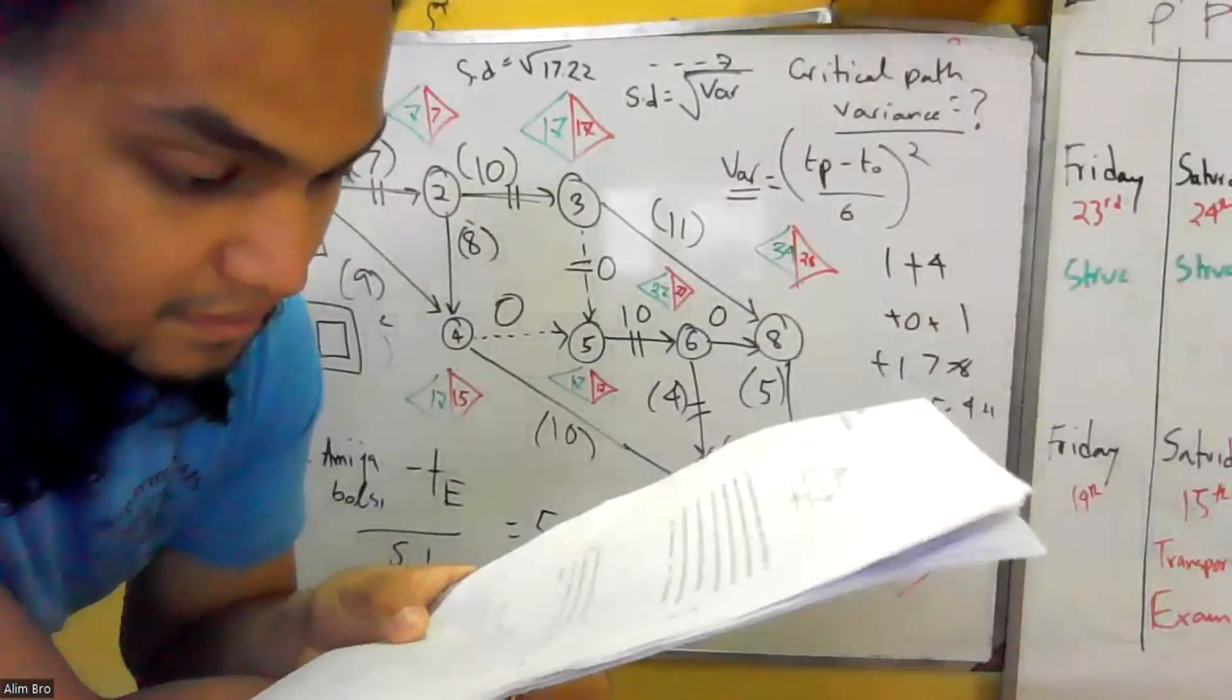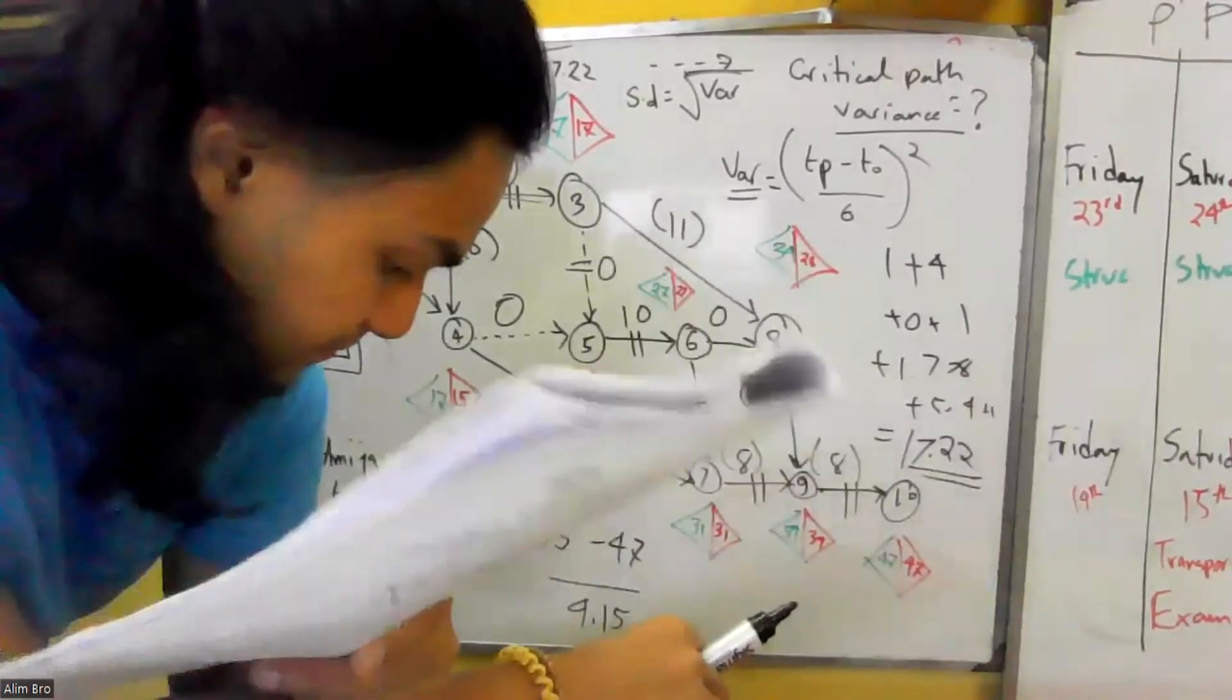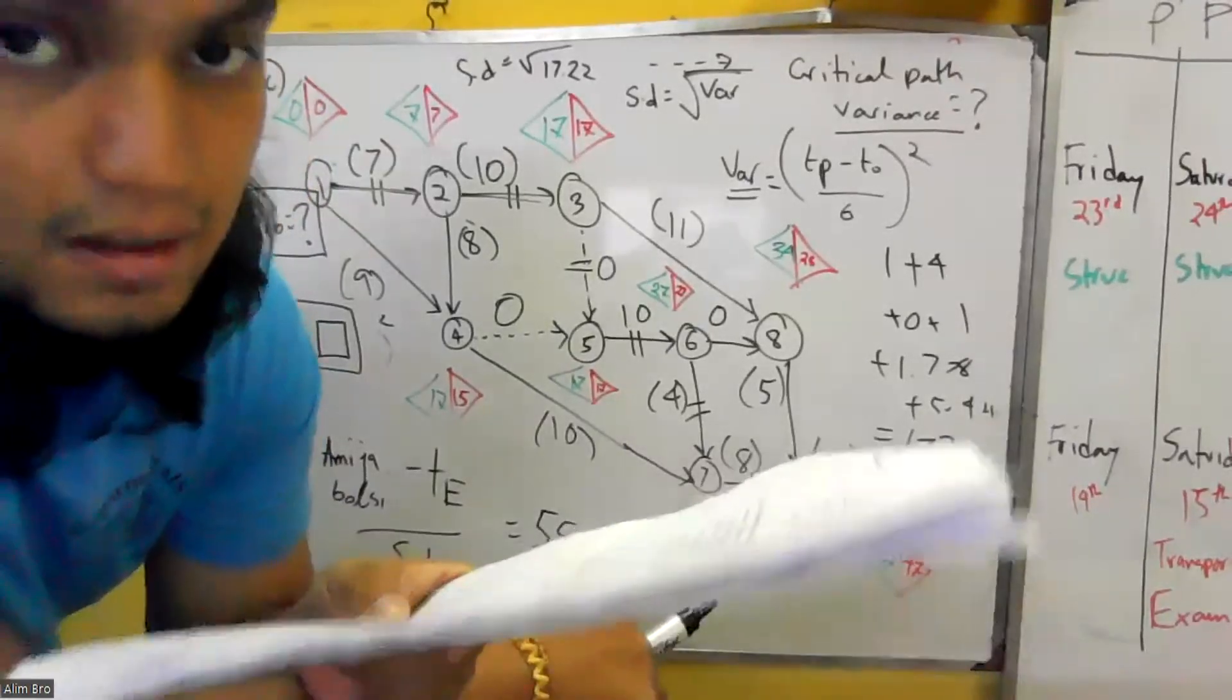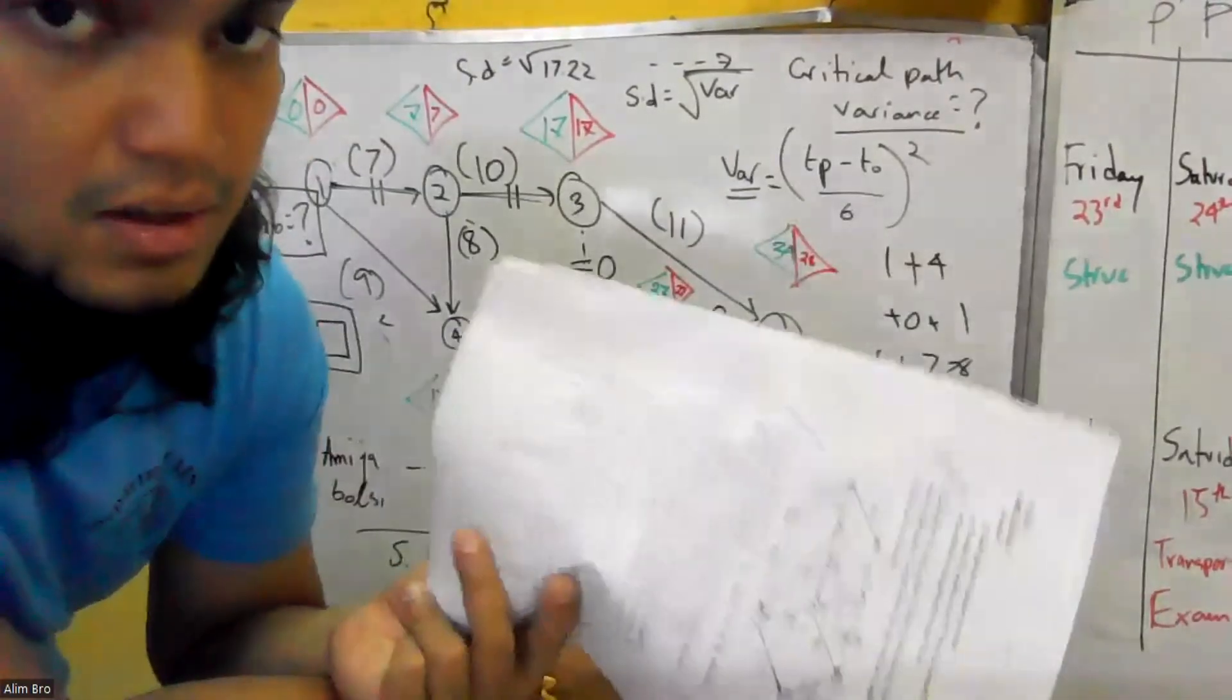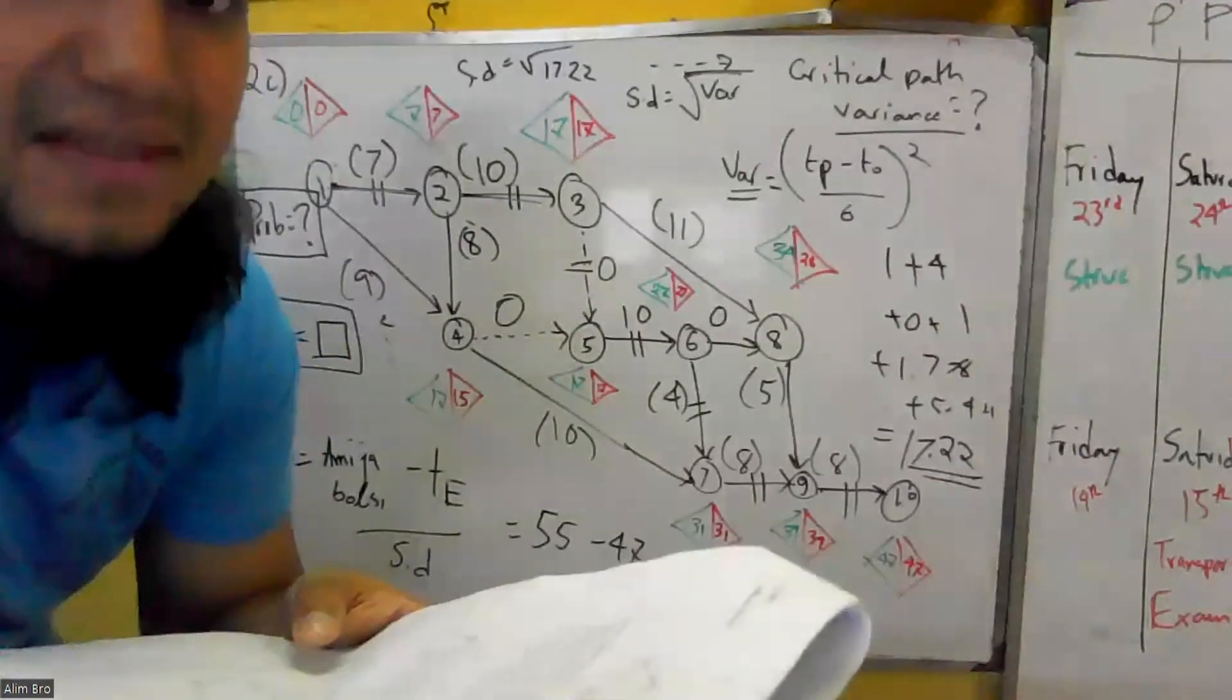Second, B succeeds activity A. C succeeds activity A. B and C succeed activity A.